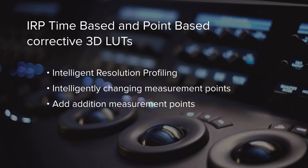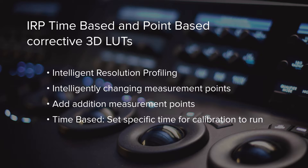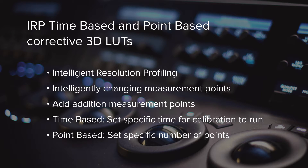The IRP time-based method allows you to set a specific time and will take as many measurements as possible in that allotted time to create the 3D LUT. The IRP point-based method allows you to set a specific number of points you want measured, and it will create a 3D LUT from those.